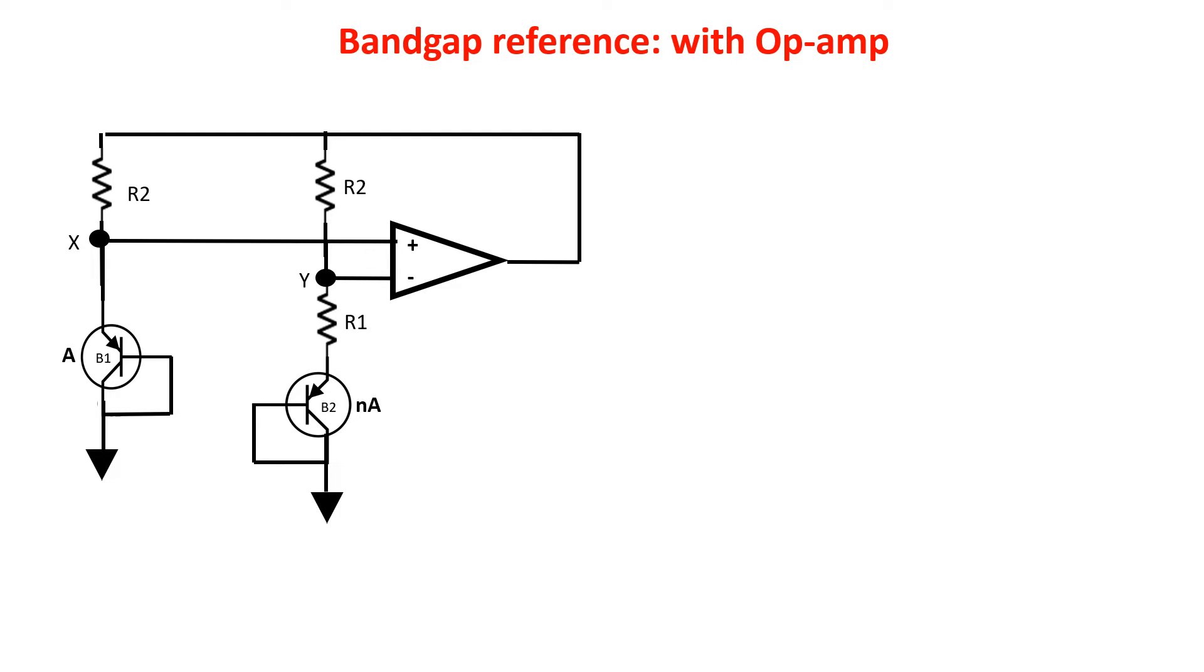First we see the op-amp. We keep the voltage on point X and Y equal through the op-amp. If for example voltage Y goes up with respect to voltage X, the output of the op-amp would lower, thus lowering the current flowing through our two resistors, therefore lowering voltage Y. In this way the op-amp keeps the voltage X and Y equal.